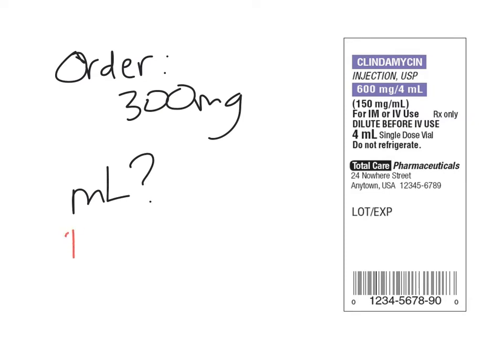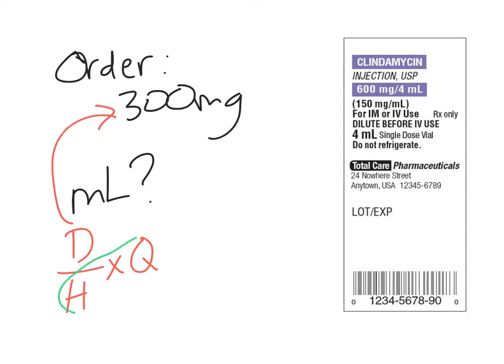Using the D over H times Q formula that we're used to using, remember D is the dosage that's been ordered. And then H and Q are going to come from that label. Remember H and Q are always listed together — that's the dose that we have on hand, sometimes called the supply dosage, dosage strength, or dose available.